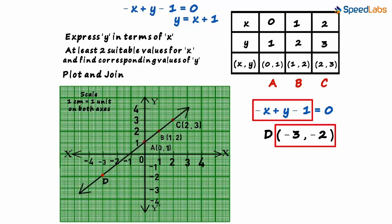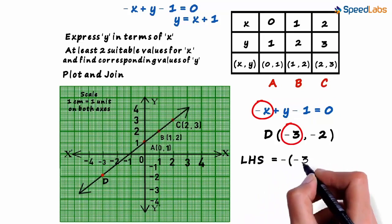The left hand side should equal the right hand side. Let us calculate the left hand side first. We substitute minus three in place of x and minus two in place of y. After substituting these values, if we get zero which is the right hand side, then it means that the line is correctly drawn.